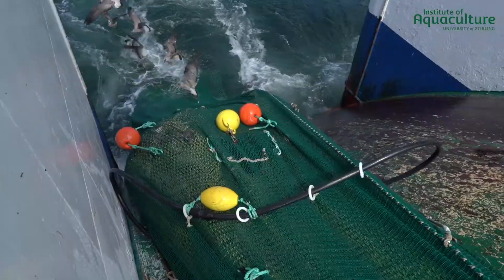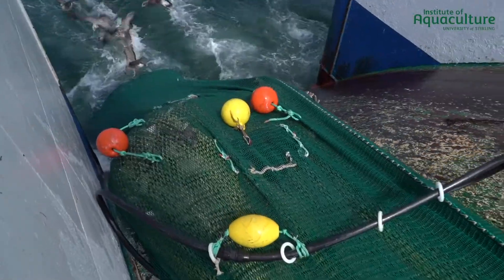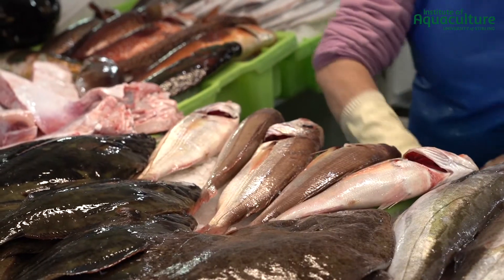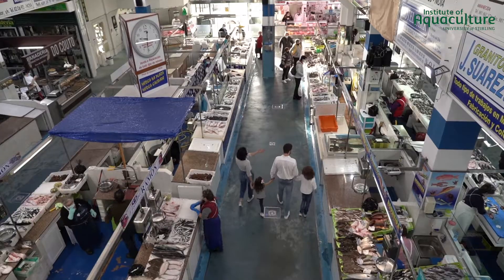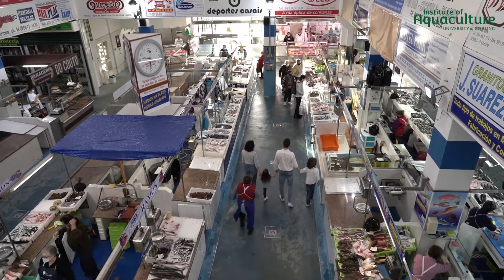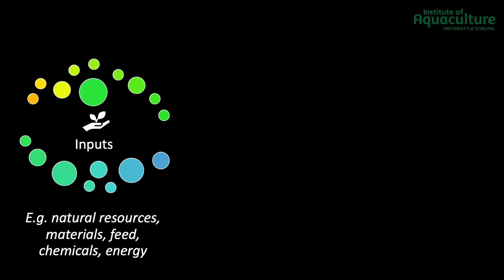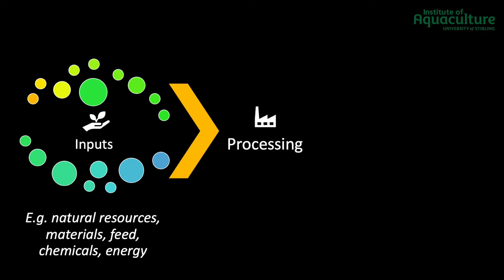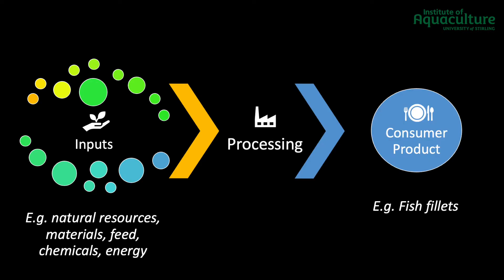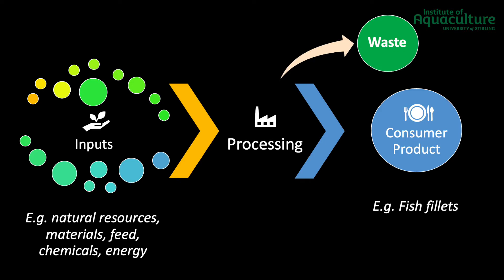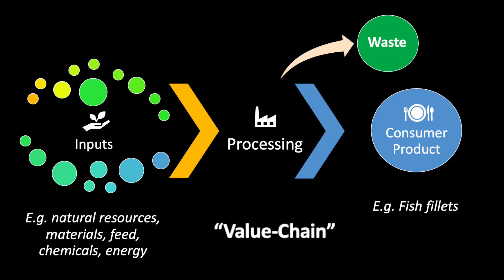Traditional production models are linear, where new resources and materials are put into production systems to create a final consumer product. This model considers inputs in a production process that transforms and adds value to the original resources in combination with each other, leading to outputs. Outputs include the final consumer product as well as waste products. This order of activities — from initial materials, production, outputs, and sales — is referred to as a value chain.